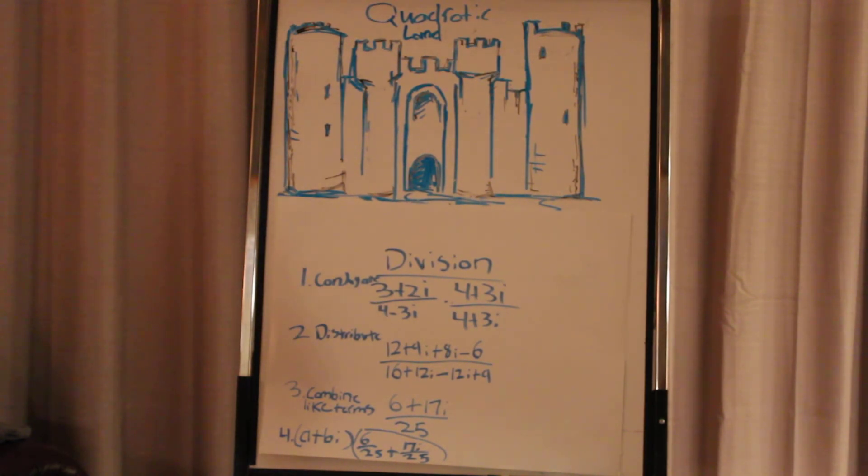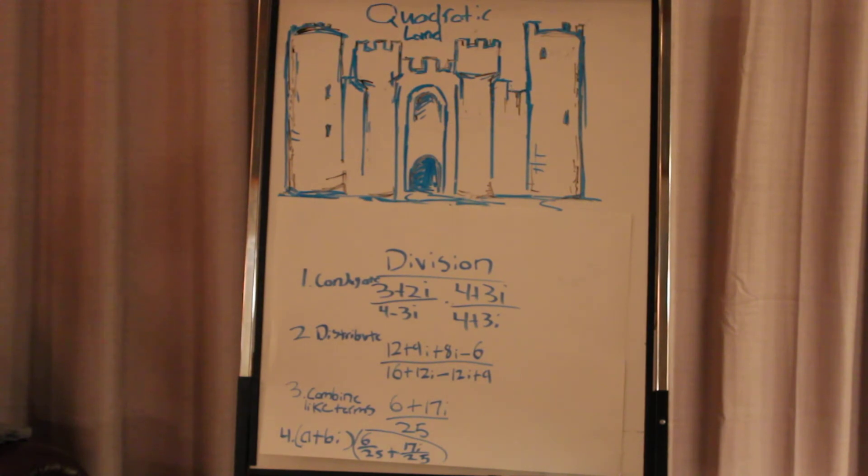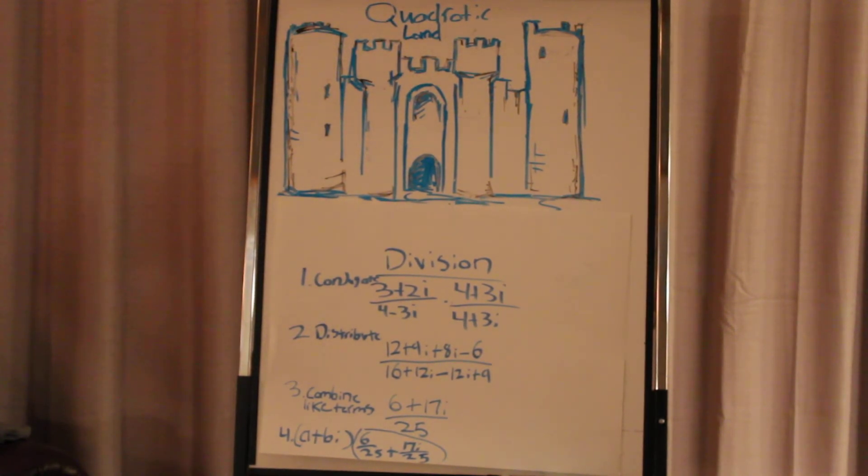And what the conjugate does is it negates the imaginary components within the denominator. So that when you get to your final conclusion, the denominator doesn't mingle with the numerator. Just the final solution. So, after that, you're going to want to distribute, FOIL, multiply it out. And then you'll get 12 plus 9i plus 8i minus 6 over 16 plus 12i minus 12i plus 9. And that's where you can see where our conjugate cancels out the imaginary numbers. And that will get us to 0 once we continue on.